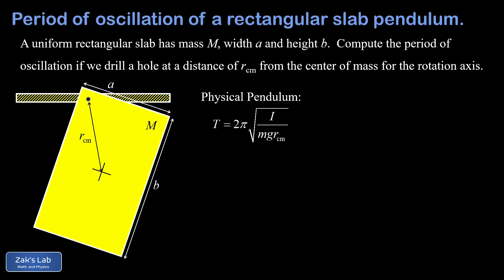First, we've already derived a general formula for the period of oscillation of a physical pendulum: T = 2π times the square root of I over mg·r_cm, where I is the moment of inertia of that physical pendulum about the actual rotation axis it's oscillating around. Notice in the denominator that r_cm is the distance between the center of mass of the object and the actual rotation axis.